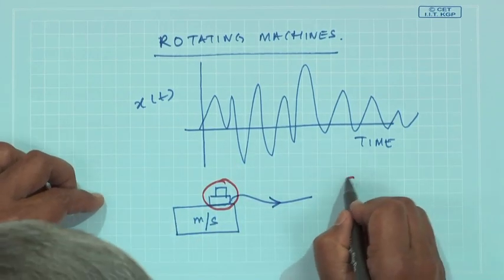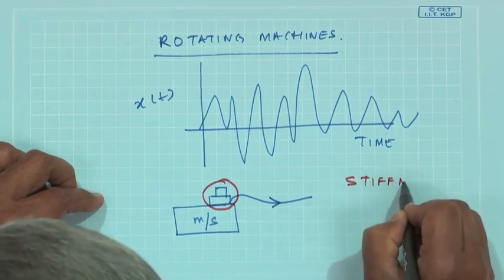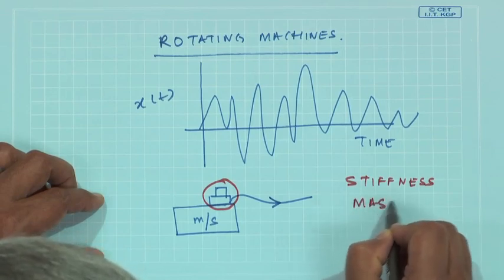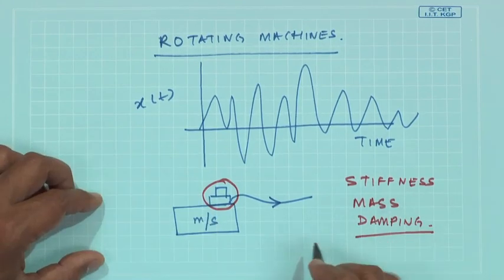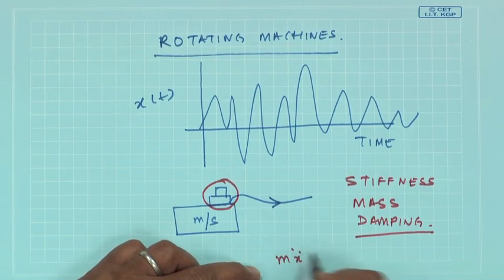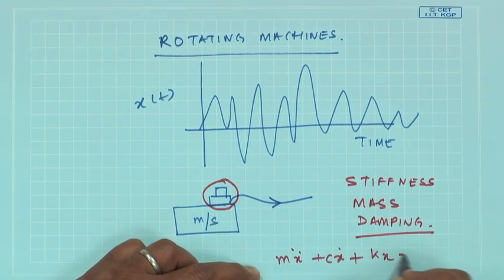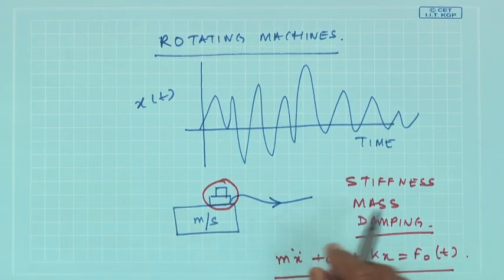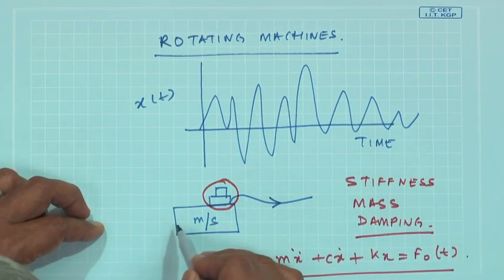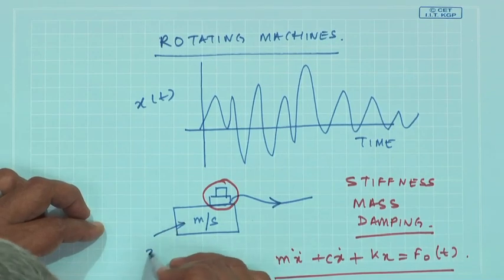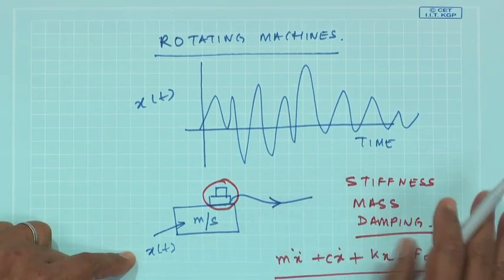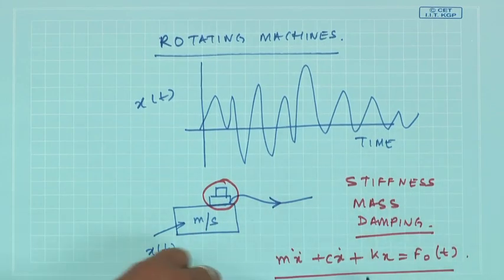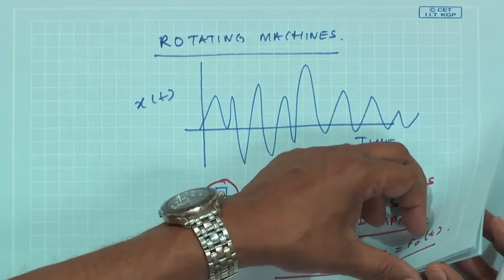The transducer will have a stiffness, will have a mass, and may have some sort of damping inherent in it. So the transducer itself is a second-order system responding to some force as a function of time. Now I am interested in finding out the signal because of this machine, which is x(t).